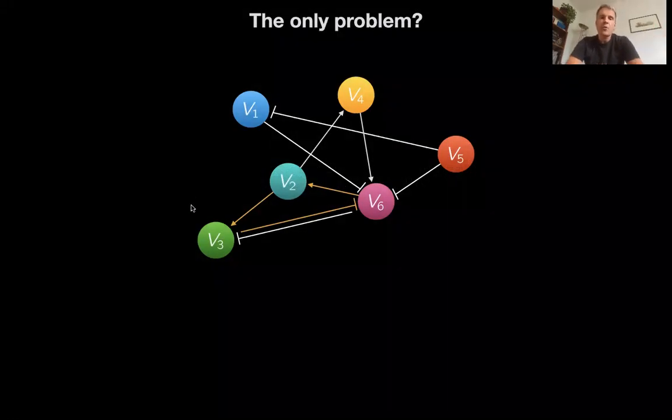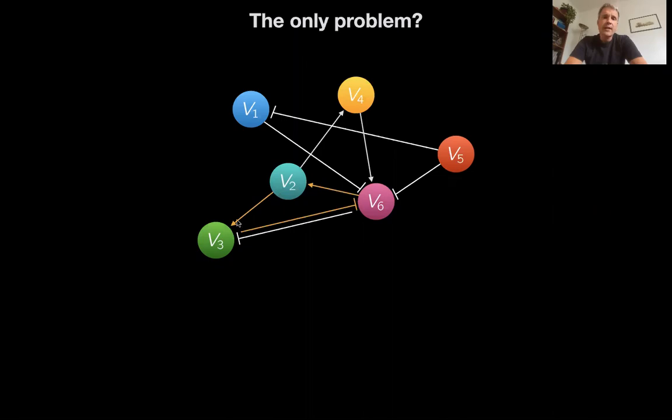Let's have a look at our little toy model here again. Let's find feed forward motives in here. There is an incoherent one, type one, as it happens between V6, V2 and V3. But you see immediately there's a complication. There is an additional backward interaction. And this often happens, of course.